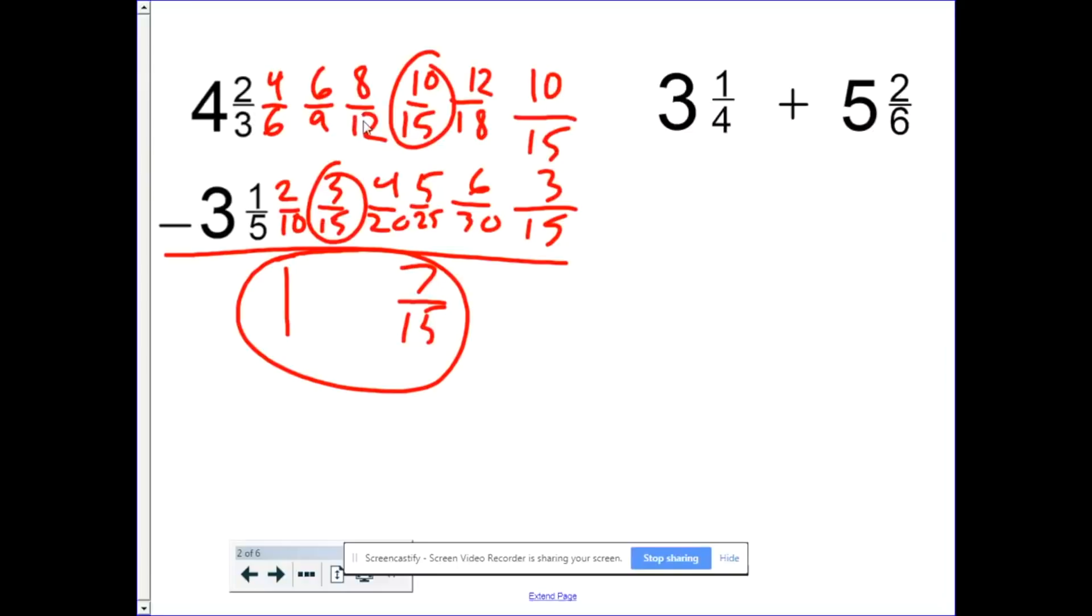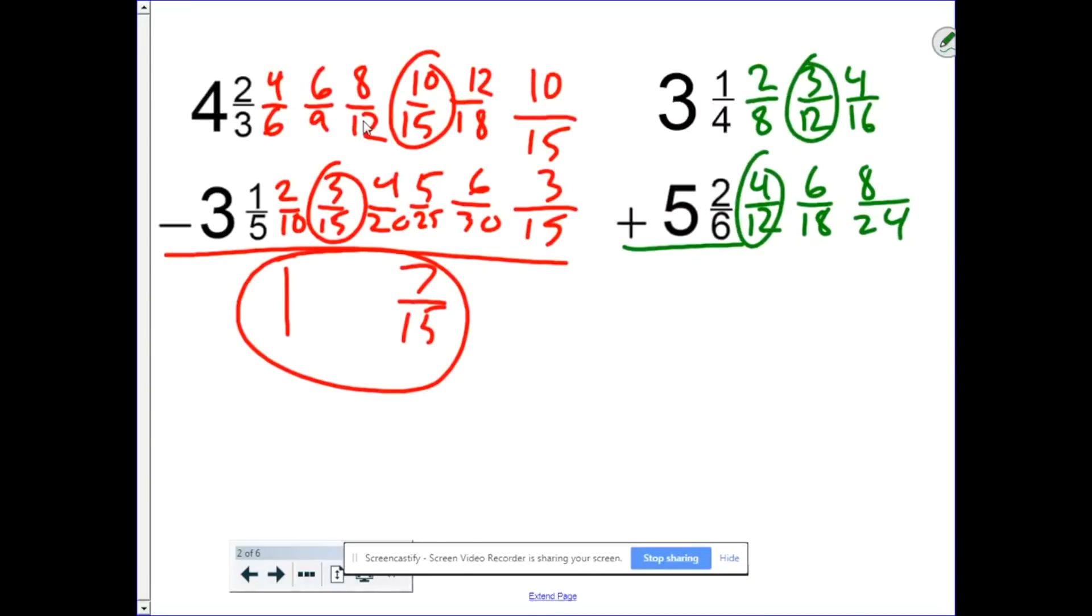Let's go ahead and do the same thing with the addition part. First, line up vertically to make it easier. Then we're going to make our multiples. 1, 2, 3, 1, 2, 3. So with 1, 2, 3, 4, 4, 8, 12, 16. 2, 4, 6, 8, 6, 12, 18, 24. So looking again, we have 3 12ths here, 4 12ths here. Those are our common denominators. So 3 12ths and 4 12ths.